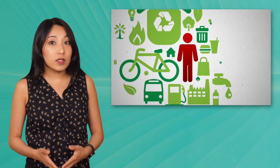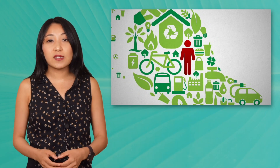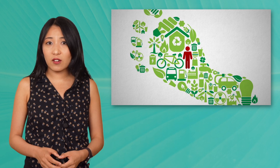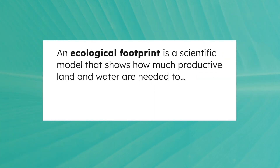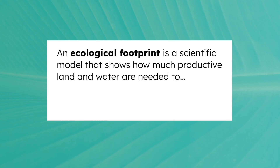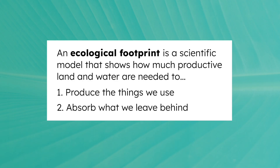Imagine tracking every resource your life depends on — the fields that grew your food, the water that kept it growing, the energy that powered your devices, and even the forests that help clean the air. That's what an ecological footprint does. It's a scientific model that shows how much productive land and water are needed to produce the things we use, like food, energy, and materials, and to absorb what we leave behind, like carbon emissions and trash. In other words, your footprint measures how much of Earth's surface is required to support the way you live.